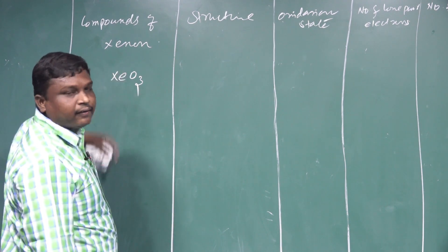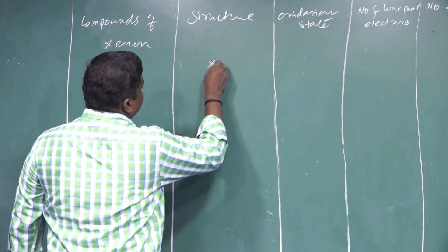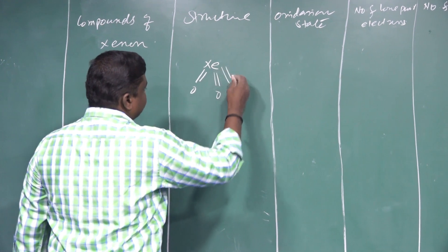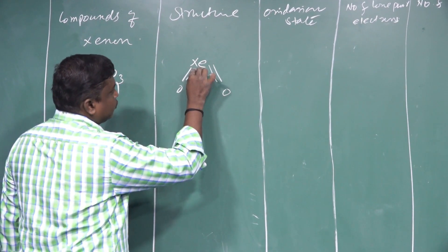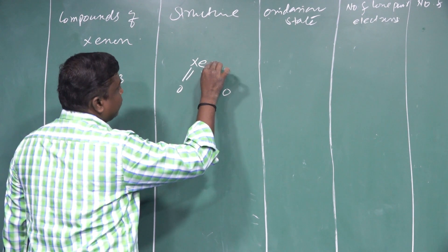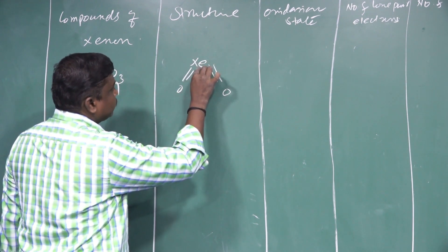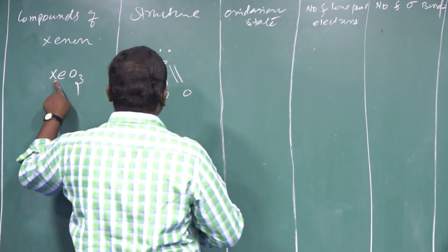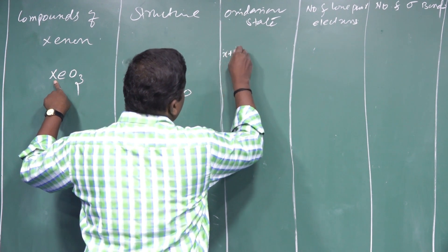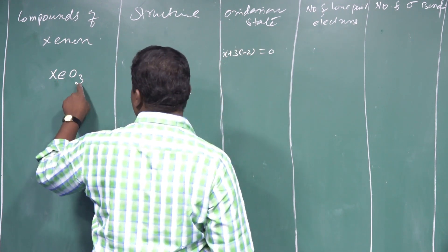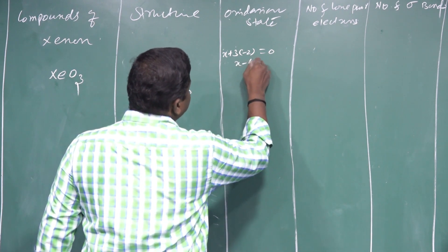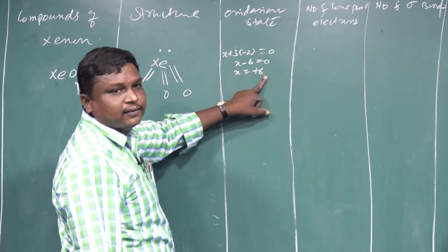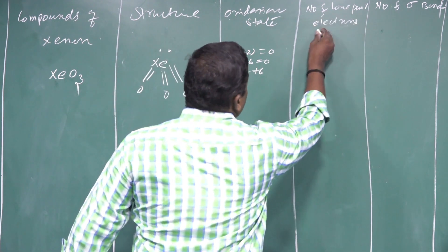Next compound: XeO3 (xenon trioxide). To calculate oxidation state: x + 3×(−2) = 0, so x − 6 = 0, giving x = +6 oxidation state for xenon in XeO3.